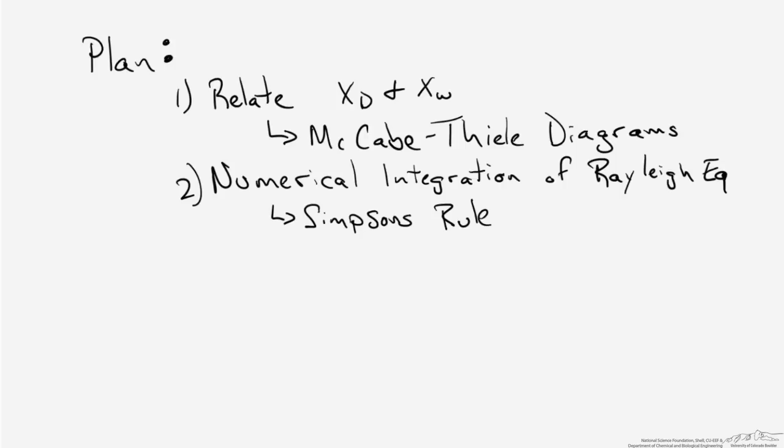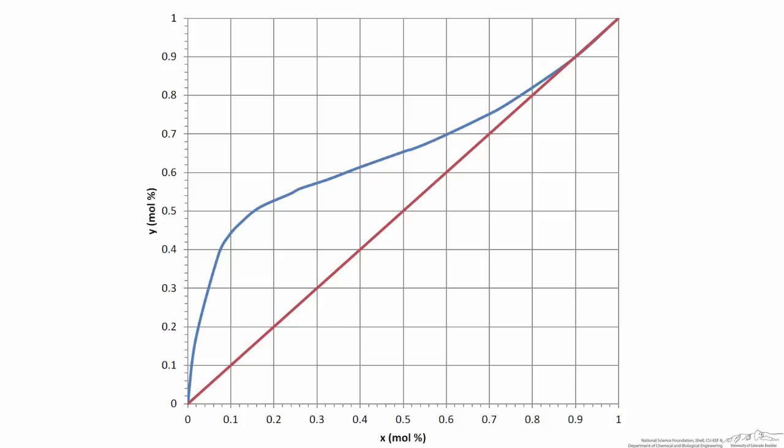First, to get started with the McCabe-Thiele diagrams, we'll find vapor-liquid equilibrium data. We have some provided here for the ethanol-water system. On that diagram, we're going to zoom into the region of interest and plot our operating line.